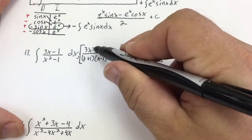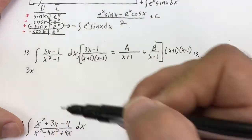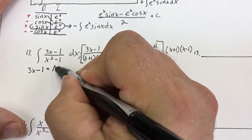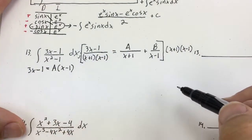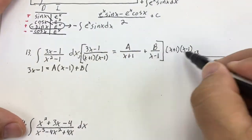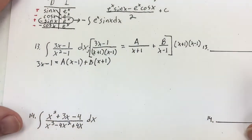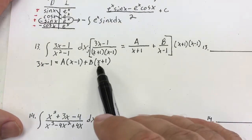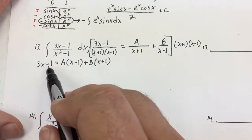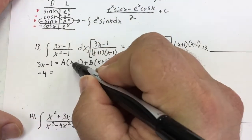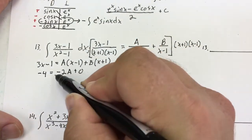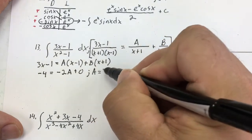When I multiply through, that gives me 3x − 1 equals A times (x − 1) plus B times (x + 1). I'm going to let x equal negative one to make the B term go to zero. Negative one times three is negative three, minus one is negative four, equals negative two A. So negative two A equals negative four, giving me A equals 2.